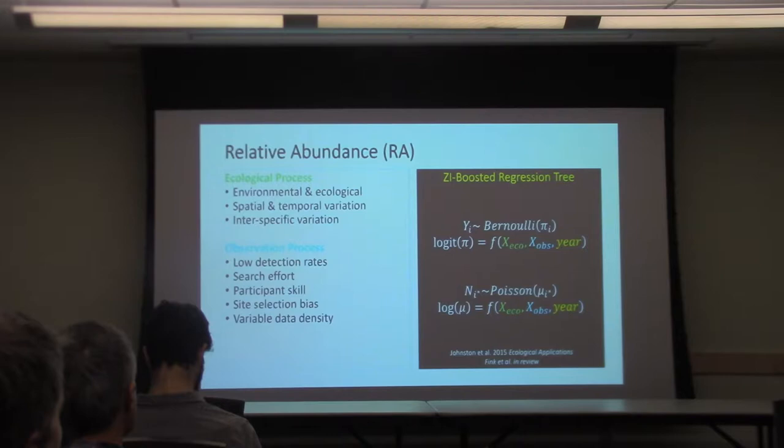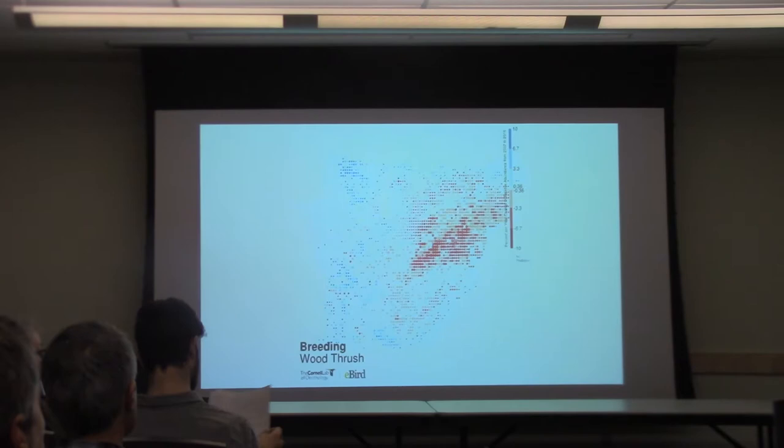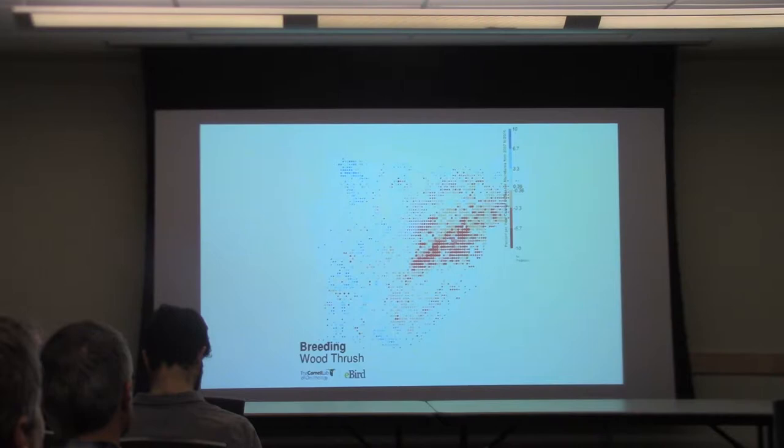When we have relative abundance across years, that's a trend. So we can get trends for many species by determining relative abundance across years. What we're looking at here is a trend map for wood thrush. The circles represent 25 by 25 kilometer areas and are scaled to the maximum relative abundance over the last several years — larger circles indicate areas where a lot of birds are or were.